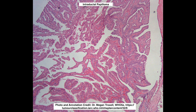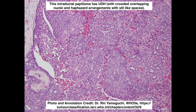Here's another instance of an intraductal papilloma. If we did a P63, the myoepithelial cells would highlight within the lesion as well as surrounding the periphery. Intraductal papillomas can also have proliferative fibrocystic change, like usual ductal hyperplasia, where you can see haphazard arrangement of the nuclei with some overlapping and some slit-like spaces.